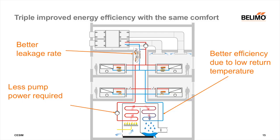In summary, with the Belimo energy valve you can achieve a triple improvement in energy efficiency with the same comfort. With only this one valve, it is possible to have an influence at three points in a building: a better leakage rate reduces the energy flow; reducing the differential pressure leads to less pump power; and higher efficiency at the boiler is achieved through delta-T management.